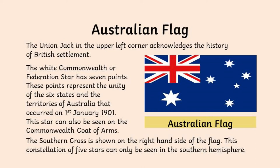The Union Jack is there because it recognises and acknowledges the history of British settlement in Australia. Then below the Union Jack you have a star — the White Commonwealth Star, the Federation Star. This has seven points, which represent the six states and the territories of Australia. Then on the other side of the flag, the five stars are a representation of a constellation that can only be seen in the Southern Hemisphere, where Australia is located.